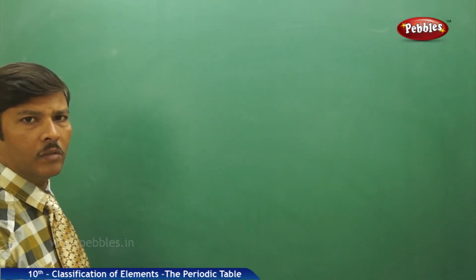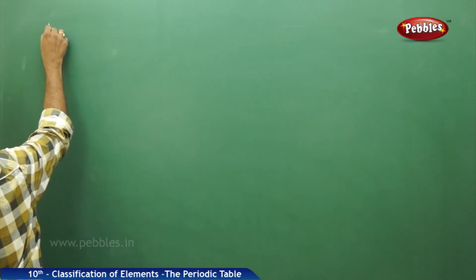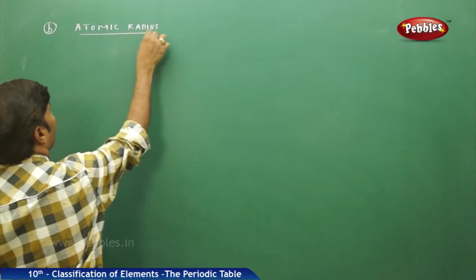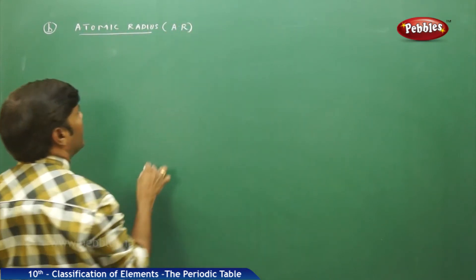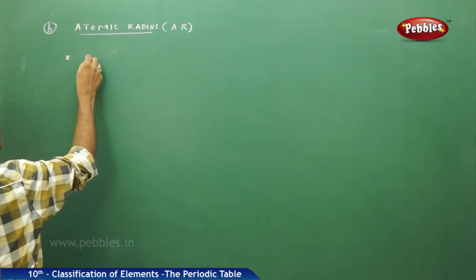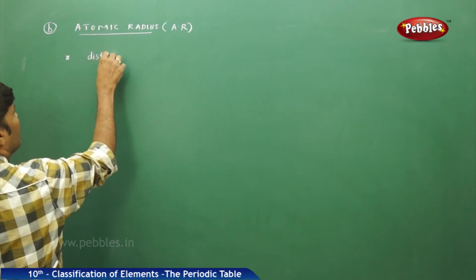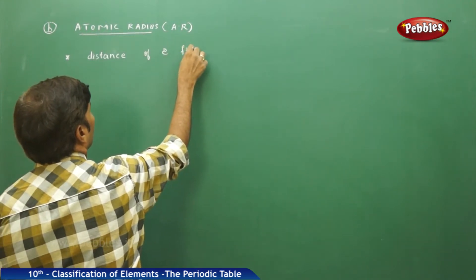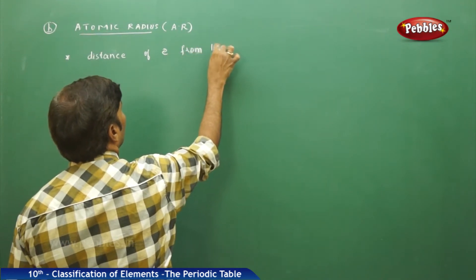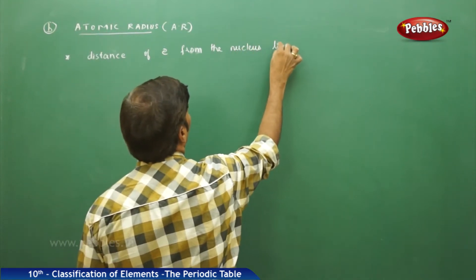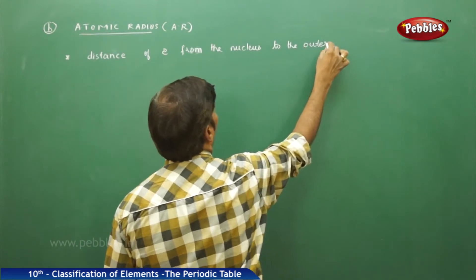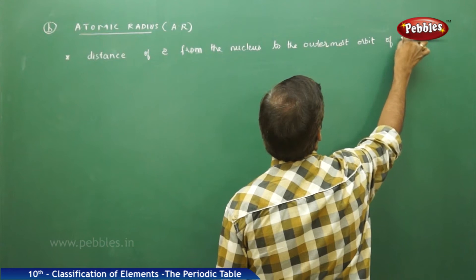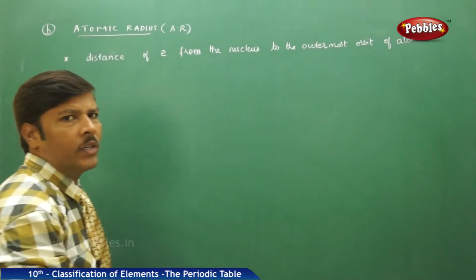The next part of the discussion in the modern periodic table is atomic radius. In general, in shortcut, it is represented as 'ar'. First of all, what do you mean by atomic radius? The distance of the electron cloud from the nucleus to the outermost orbit of an atom — we can call it the atomic radius.